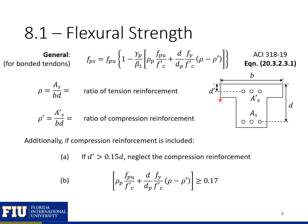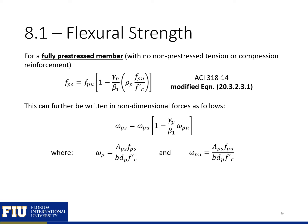Our B, again, is the width of the compression face. So if we have a T-shaped section where bending causes tension in the bottom and compression in the top, then B is the width at the compression face. Note that if we have compression reinforcement, there are two additional requirements provided by ACI that we need to make sure we meet.